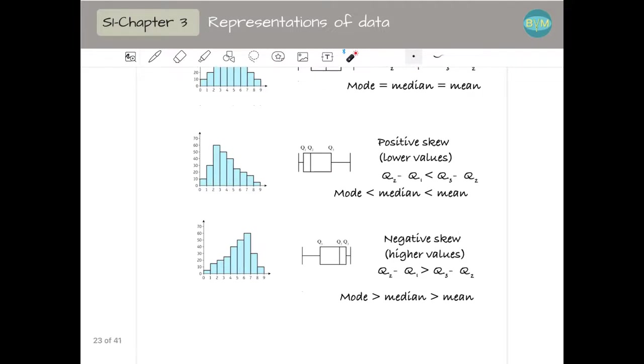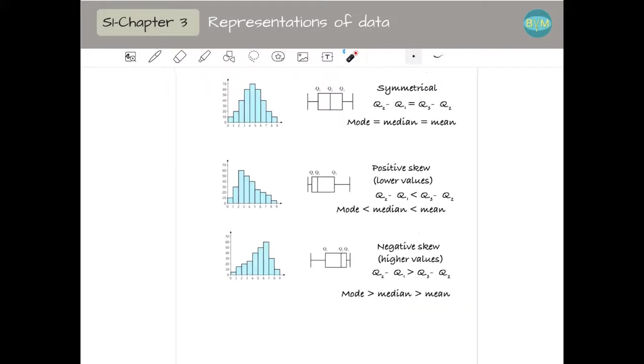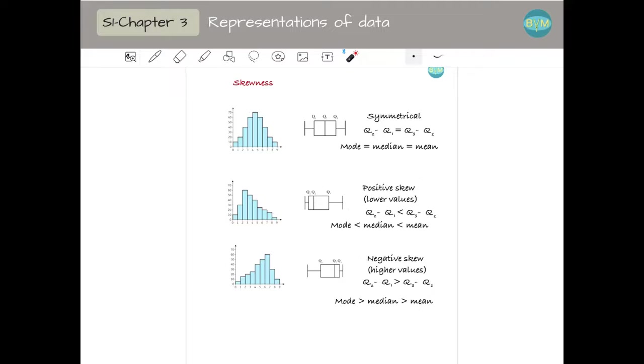And we have negative skew when that happens the other way. So instead of having our values central, we have them towards greater values. The difference in a box plot between Q3 and Q2 is smaller than the difference between Q2 and Q1. Mode is greater than the median and greater than the mean. So these are the three types of skewness that we can have and that's what they are going to ask us in the questions.